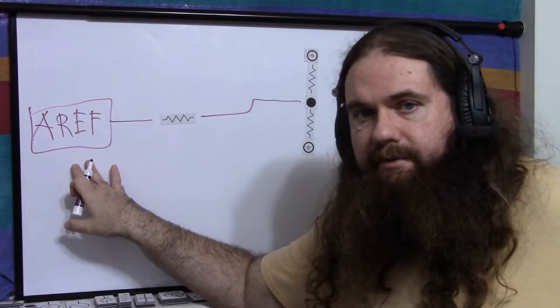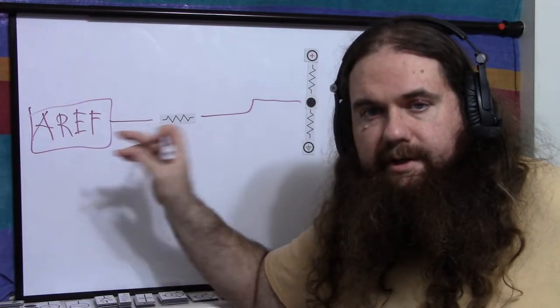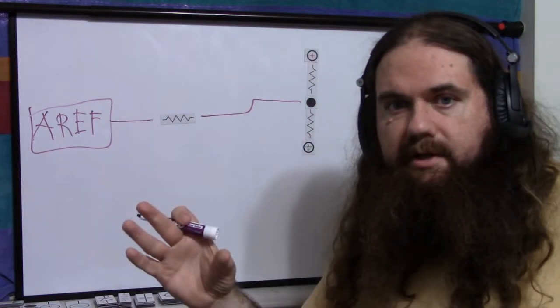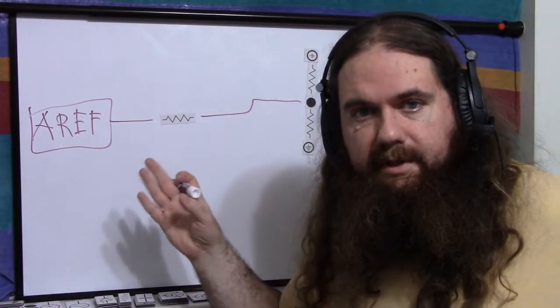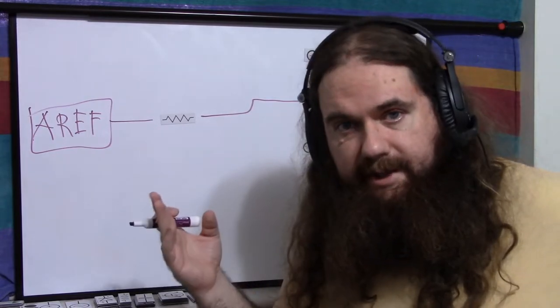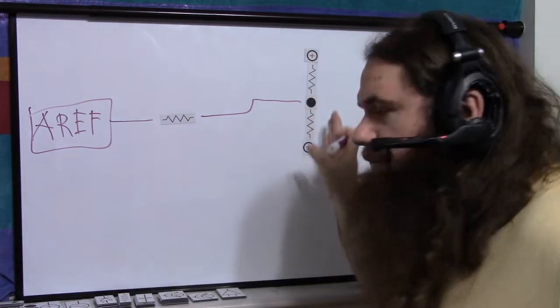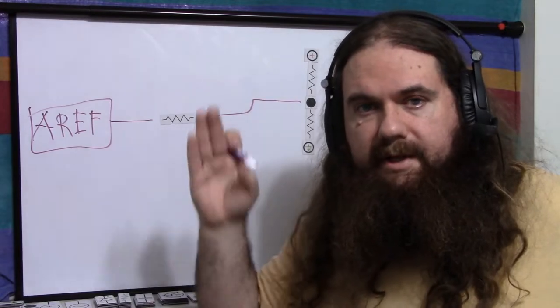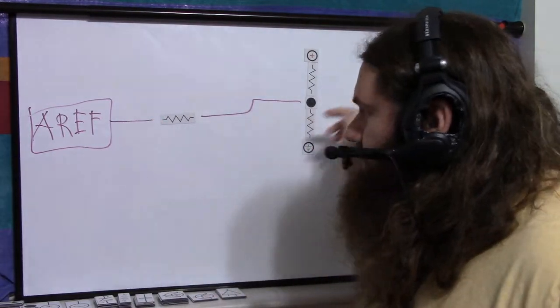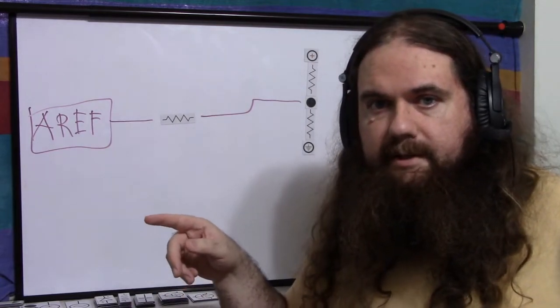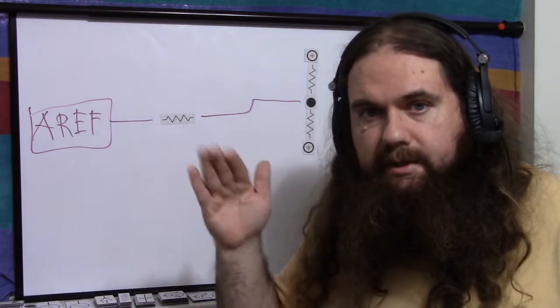First of all, the AREF pin does require current. Every time you read, it draws current, and when you're not reading, it's just blocked. So what you have is a variable impedance load. And that's terrible if you have any sort of impedance on the supply because it's going to make it fluctuate. Every time it draws current, that current is going to have to go through this impedance, and it's going to give you wiggle in your voltage.